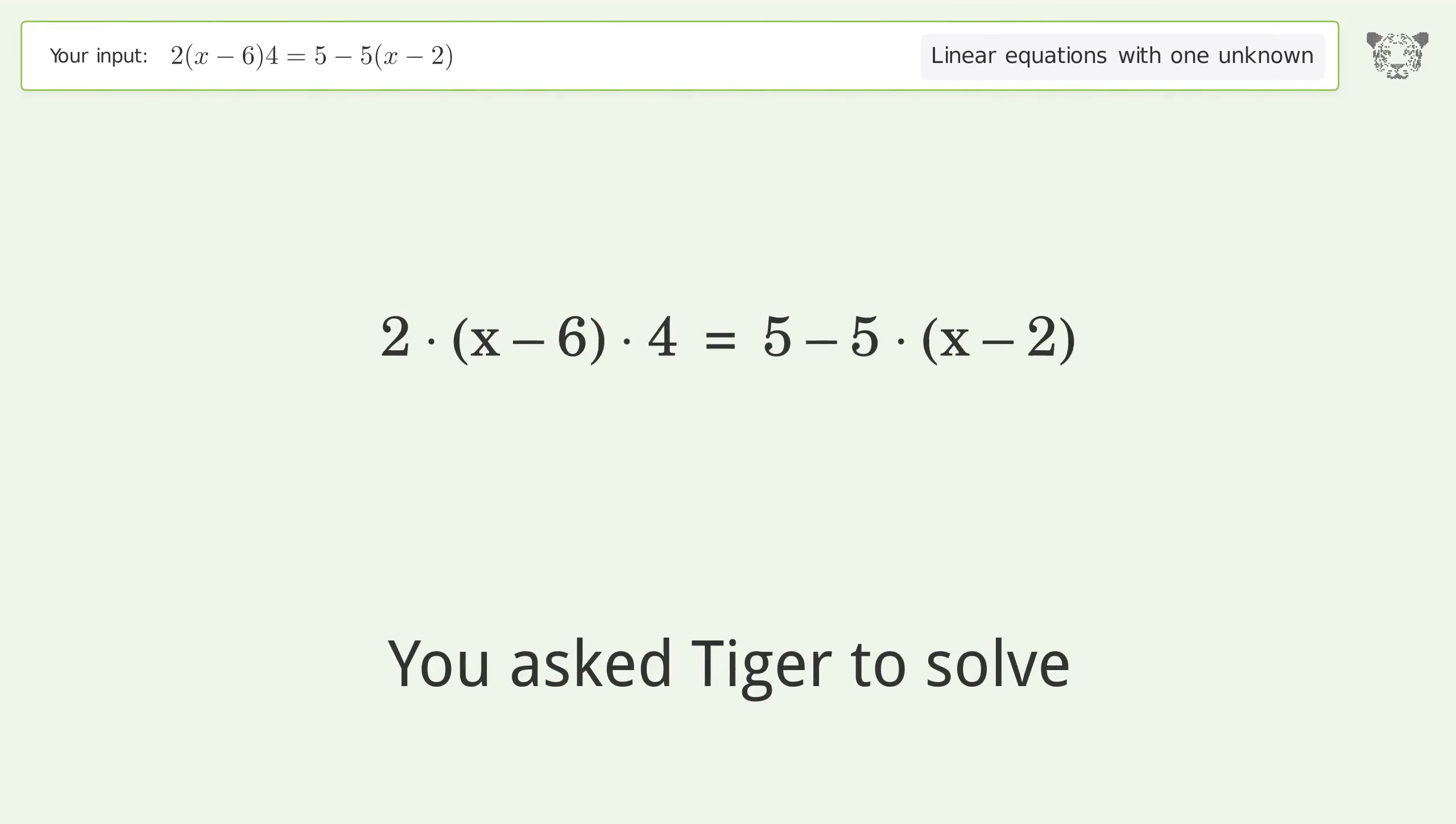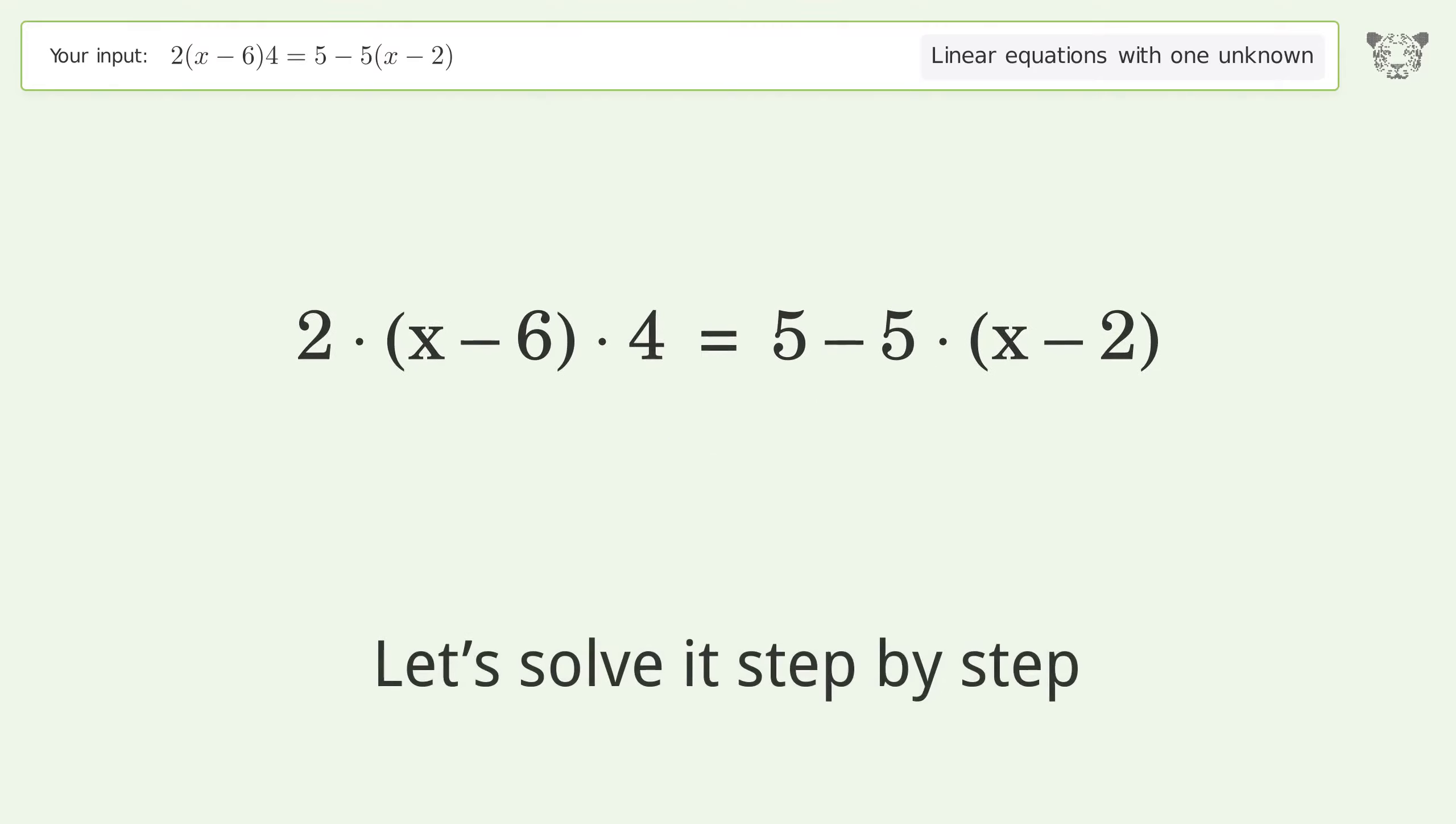You asked Tiger to solve this. This deals with linear equations with one unknown. The final result is x equals 63 over 13. Let's solve it step by step.